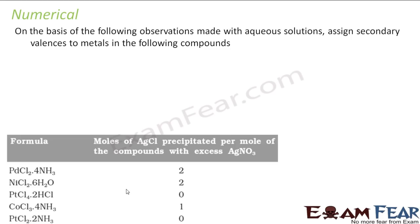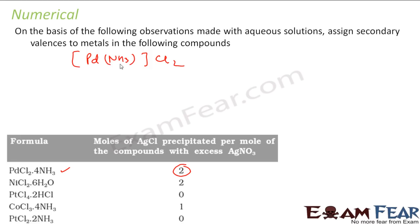Now let's work on some numericals. The question asks us to assign the secondary valence to the metal in the following compounds. For the first compound, it gives two chlorine molecules in solution, so two chlorines are outside the coordination sphere. The remaining — four NH3 — is inside. So palladium is linked to four ammonia molecules directly, and the coordination number, which is the secondary valence, is 4.